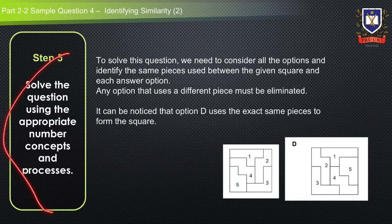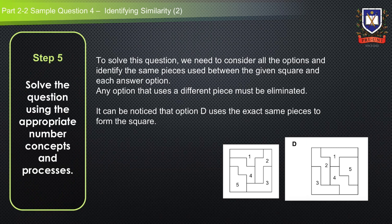Step five is where we solve the question using appropriate number concepts and processes. To solve this, we need to consider all options and identify the same pieces used between the given square and each answer option. This is why we need to use the process of elimination — any option that uses a different piece not found in the given stimuli must be eliminated.